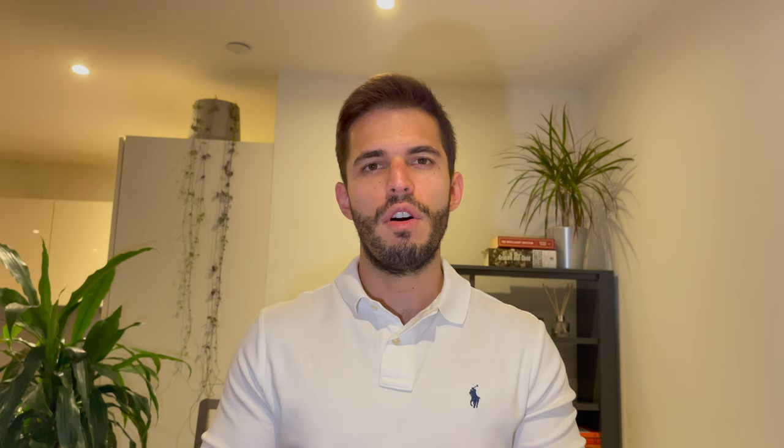If we dig deeper into the effects or implications of having low bond yields, not only do investors prefer to invest more in stocks, but it is also cheaper for companies to borrow money at low interest rates, which they can use to either invest in their own growth or to stay in business during difficult times. This causes stock prices to go up, which contributes to high price to earnings ratios.